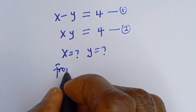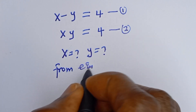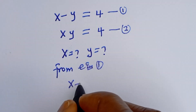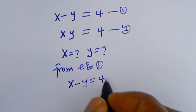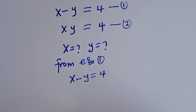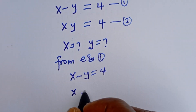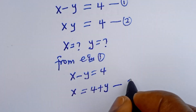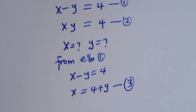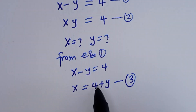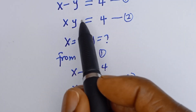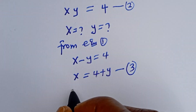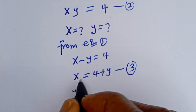So from equation 1, we can make S the subject of the formula. X minus Y is equal to 4, so S is equal to 4 plus Y. Let's call this equation 3.